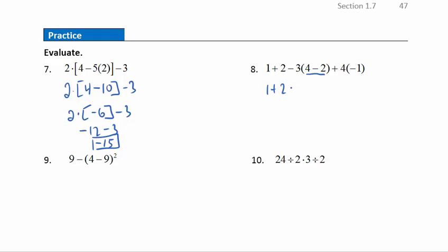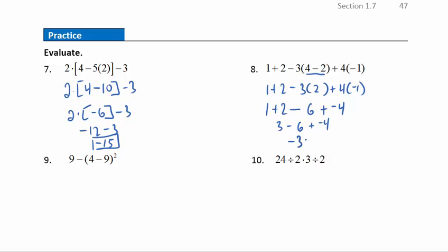Practice question eight: starting with parentheses — 4 minus 2 is 2; the other parenthetical is already a single value. No exponents. Multiplication: 3 times 2 is 6, and 4 times −1 is −4. Then for addition and subtraction, working left to right: 1 plus 2 is 3, then 3 minus 6 is −3, then −3 plus (−4) gives a final answer of −7.